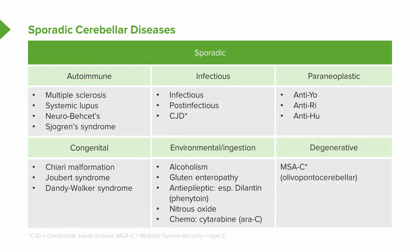Lastly, we can see degenerative problems affecting the cerebellum. The one to remember most is multiple system atrophy of the cerebellar type — atrophy of multiple brain areas with a predilection for cerebellar atrophy. This was formerly called olivopontocerebellar atrophy, and it is a degenerative condition.